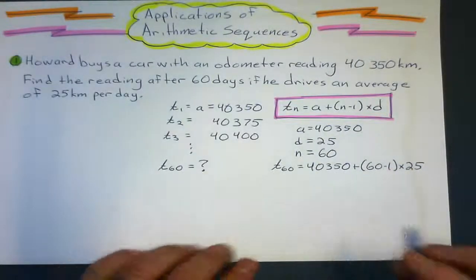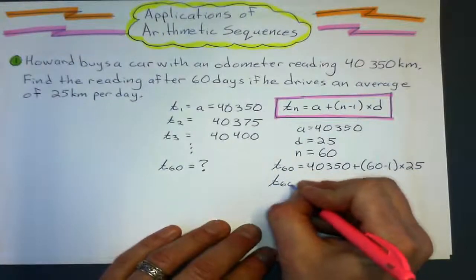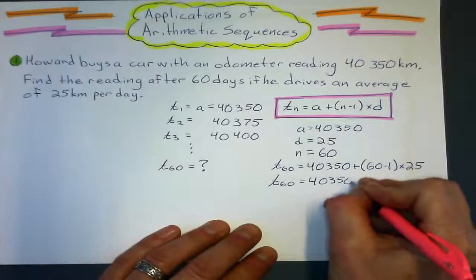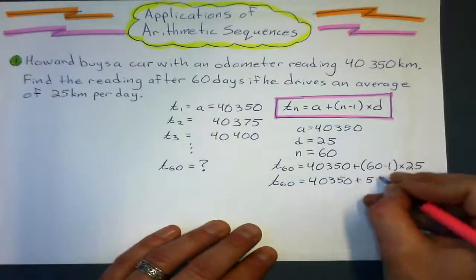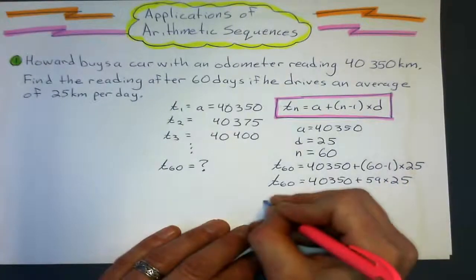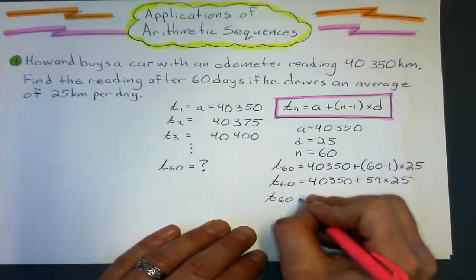So the 60th term is going to be, I'm just rewriting it, showing all the steps, is going to be 40,350 plus 59 times 25. And now it's calculator time.